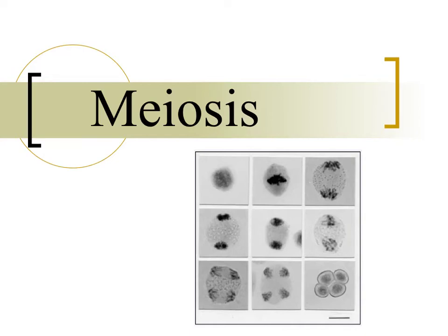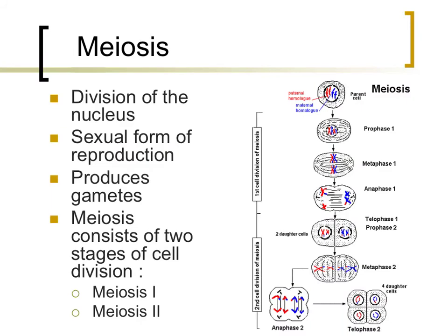Most of this video will assume that you are familiar with the stages of mitosis and how they occur specifically. Meiosis, like mitosis, is the means by which the nucleus of a cell divides. Instead of producing somatic cells, such as skin cells, muscle cells, or stomach cells, as in mitosis, gametes are produced during meiosis.